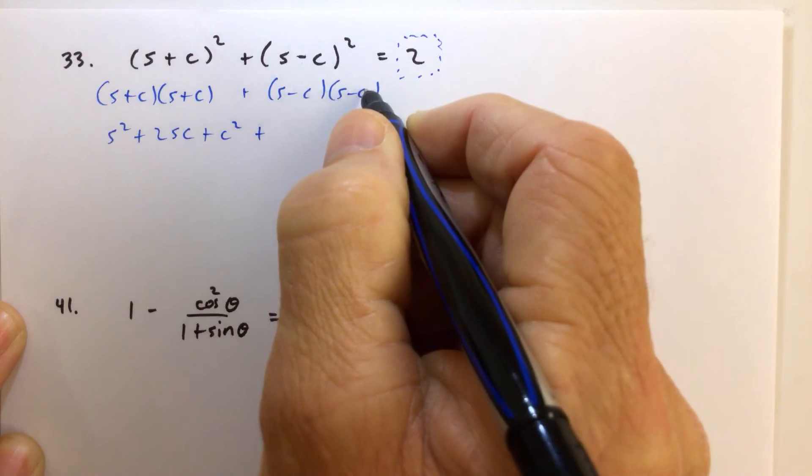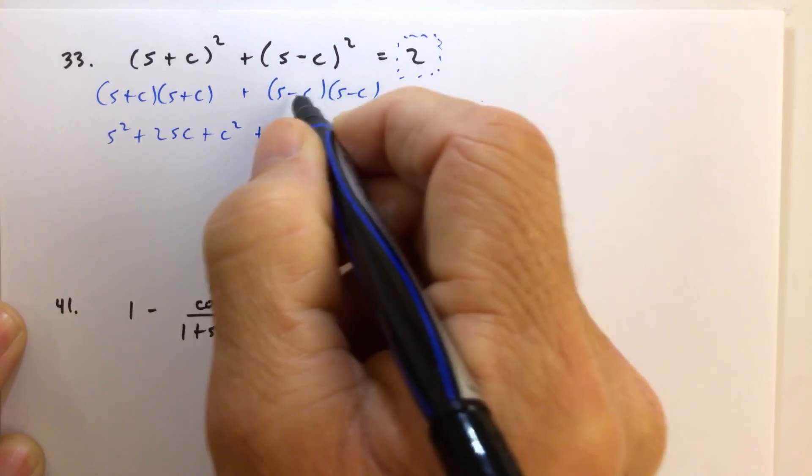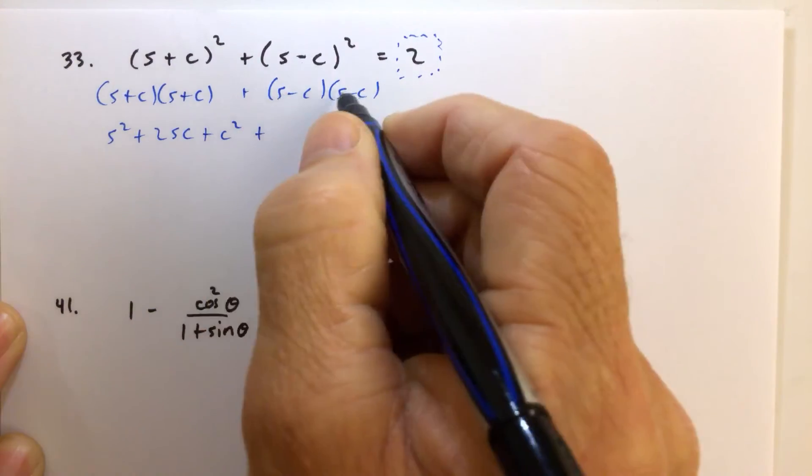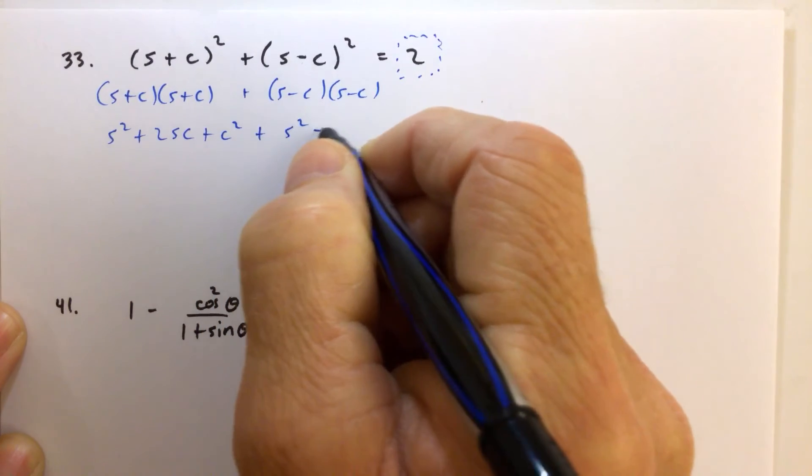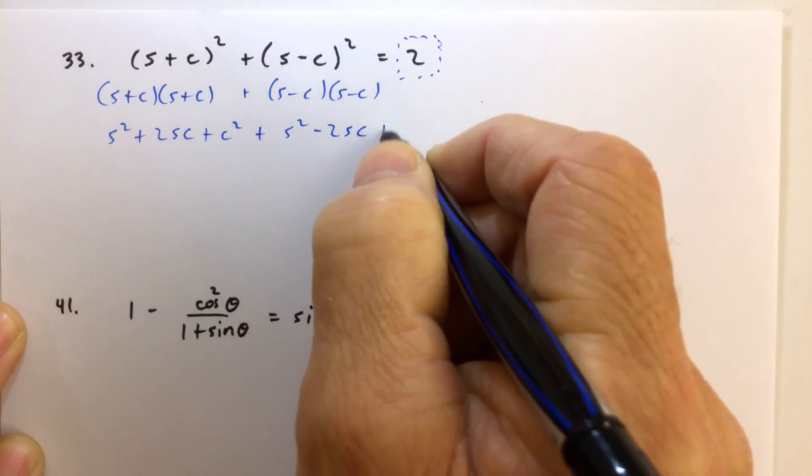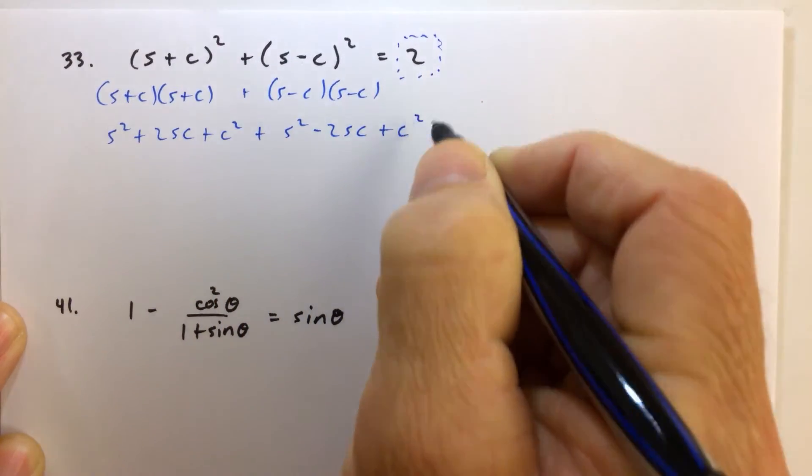And then again, we're going to FOIL this product here. S times s is s squared. And then we have a minus 2sc. And then again, we have a plus c squared.